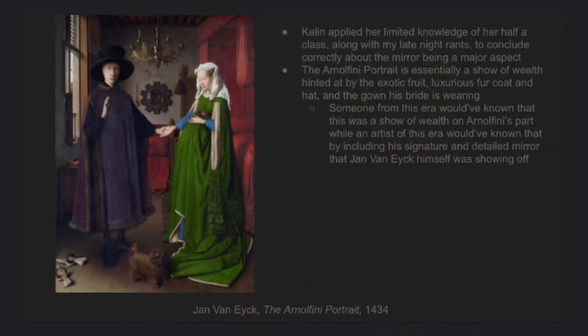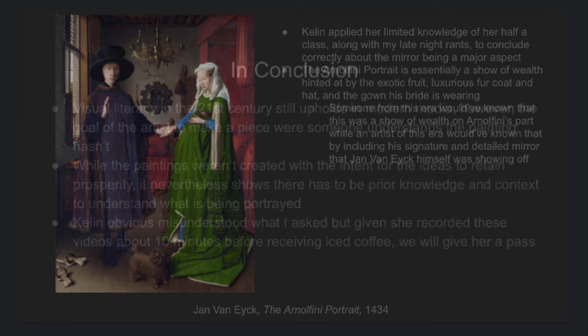In this painting, Arnolfini is showing off his wealth with subtle hints in the background — exotic fruits, the shoes that he's wearing, and the garments that he's wearing. Jan van Eyck also tries to show off by demonstrating his talent, making small portraits within the mirror itself and signing his work, which wasn't very common during that era of art.